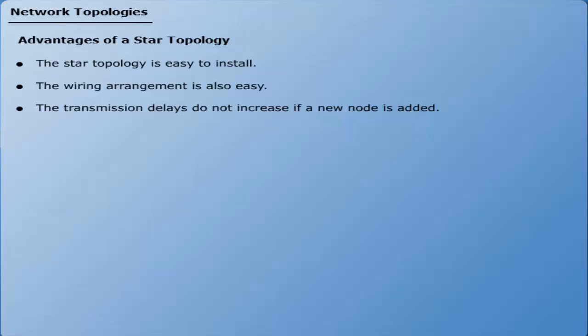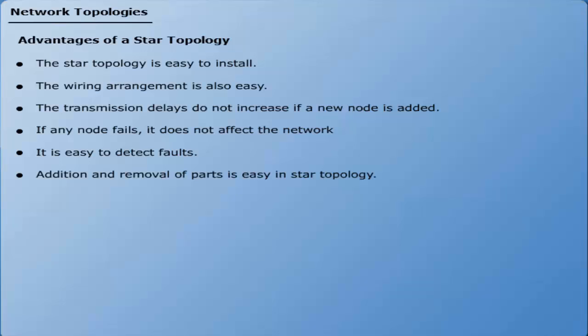Number 4: If any node fails, it does not affect the network. Number 5: It is easy to detect faults. Number 6: Addition and removal of parts is easy in star topology.